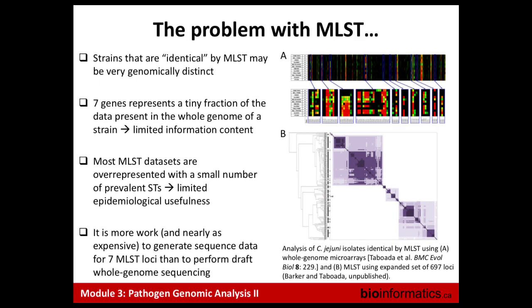Even though MLST was great in the late nineties and early two-thousands, there are problems that have been manifesting. Foremost is that it only uses seven genes out of thousands in a strain, so you're looking at a very small fraction of the genome. Strains that are otherwise quite different might show the same sequence type, and the reverse can be true as well by chance.